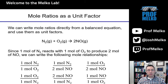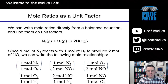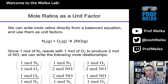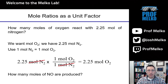Now let's get into some of these calculations. Here's a new reaction where we can write several mole ratios as unit factors, just like we've done with our previous reaction. There are a bunch of different types of ratios I can write, and it depends on what the question is asking for. I read this reaction as one mole of N2 reacting with one mole of oxygen to make two moles of nitric oxide. Now, how many moles of oxygen react with 2.25 moles of nitrogen? This is an example question we need to solve.